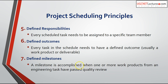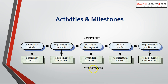Defined milestones: a milestone is accomplished when one or more work products from an engineering task have passed a quality review. For example, from the feasibility study we get the feasibility report, from requirement analysis we get the SRS document, from prototype development we get the evaluation report, and from design we get the architectural design. These are the milestones achieved at the completion of each activity.